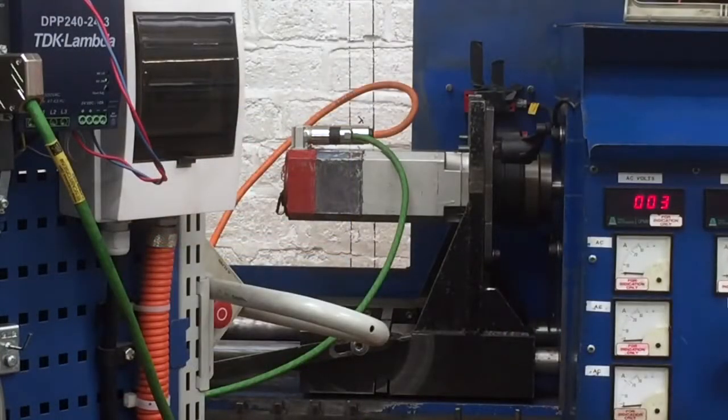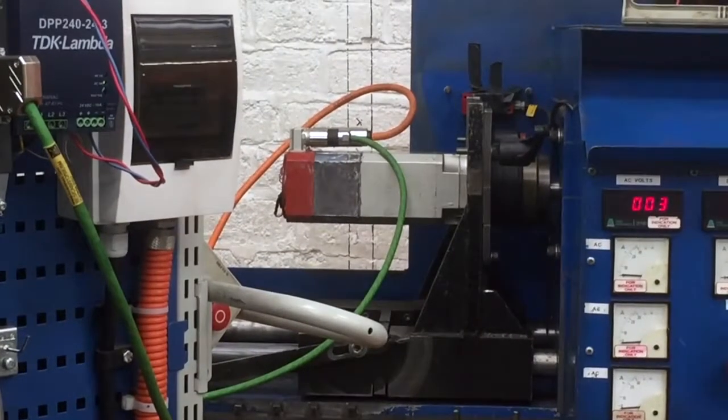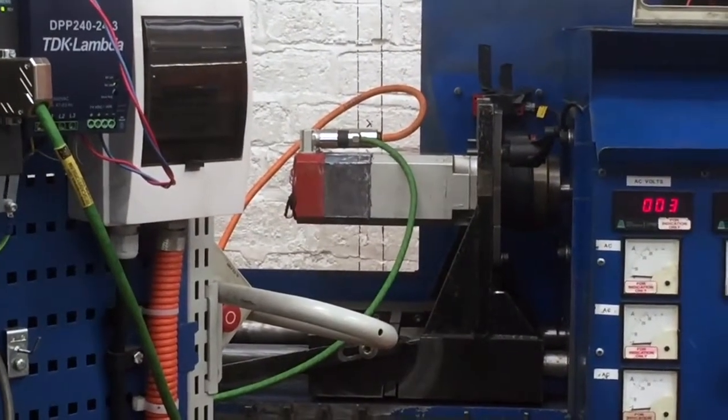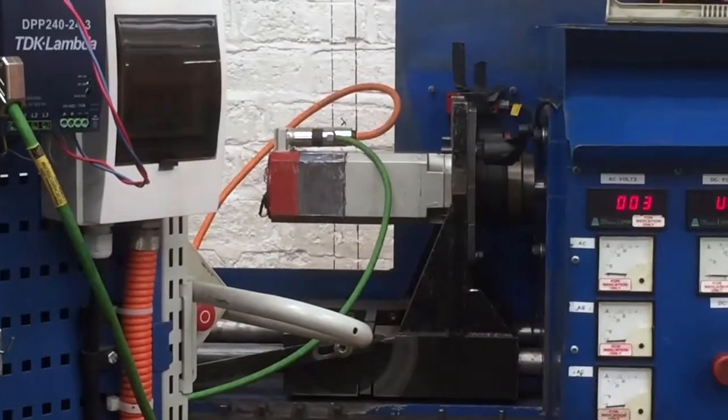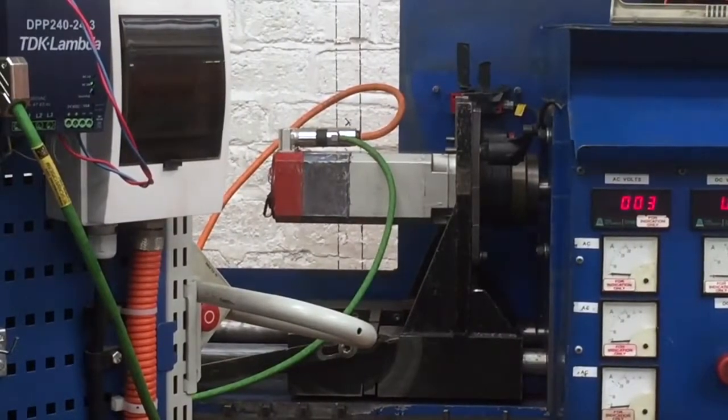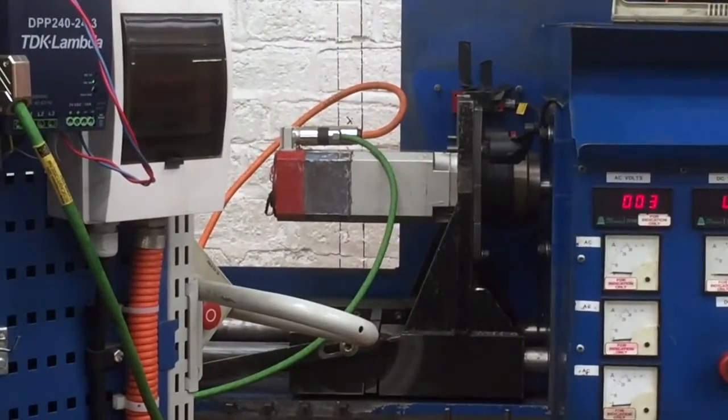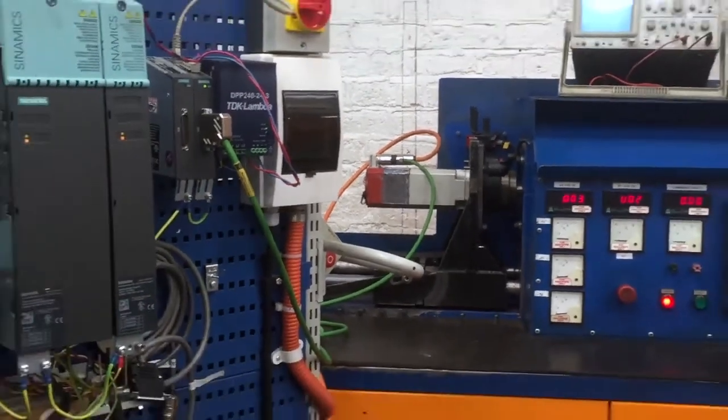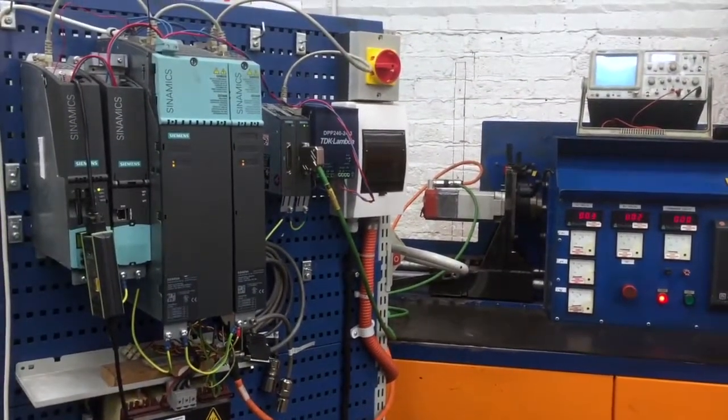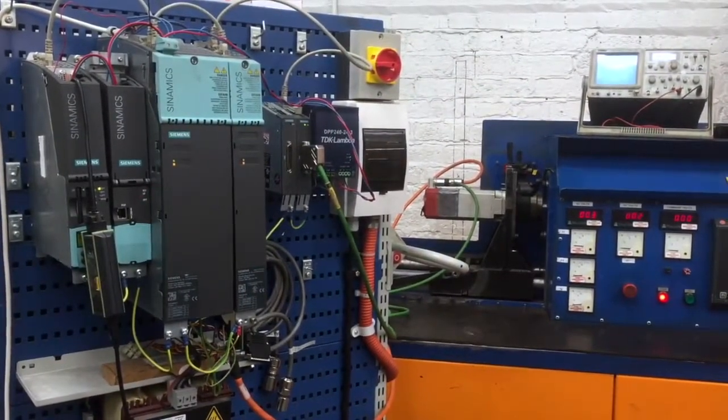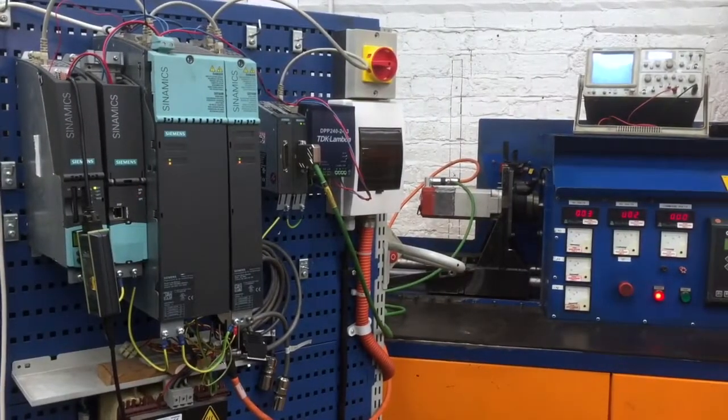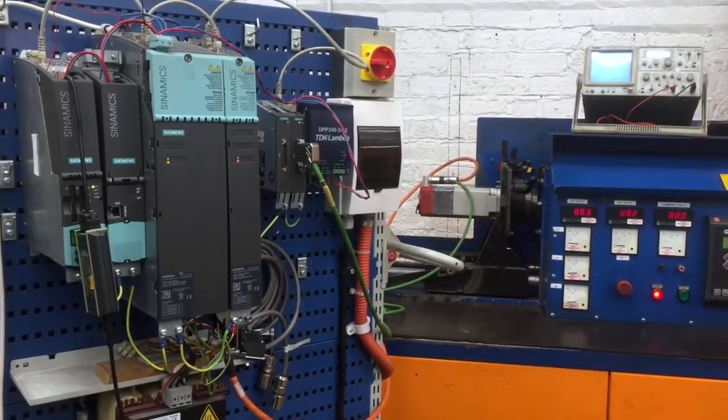We are now performing the first test on the motor, which is a no load test to check for the motor operation. As you can see, the motor is rotating, the coupling into our test rig. The drive system we use for Siemens servomotors is the S120 Sinamics range. This will give us the ability to test all Siemens range of servomotors.